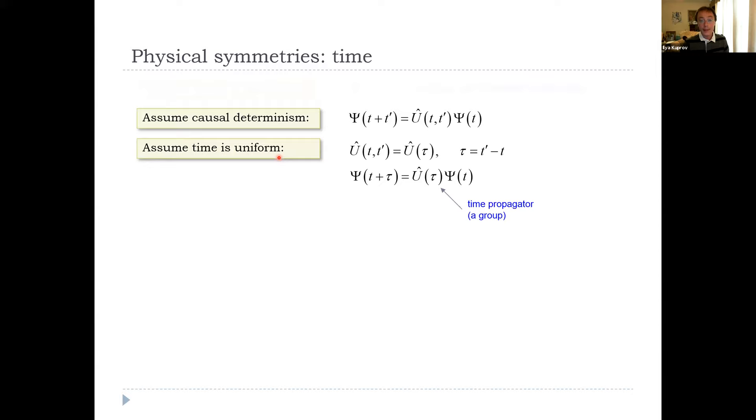We will also assume that time is uniform. That is, these rules do not depend on the absolute time—they only depend on the increment, the difference between t and t prime. We'll call it tau, so we have a U of tau. So if we had a descriptor at a time t and an evolution for a time tau, we will have a descriptor at t plus tau. Then of course, the superposition of these operators is another such operator. They're called propagators. Information cannot be lost, so for every propagator there must be an inverse. There's a unit propagator that does nothing. That is the list of properties required of a group. So we actually have a propagator group.